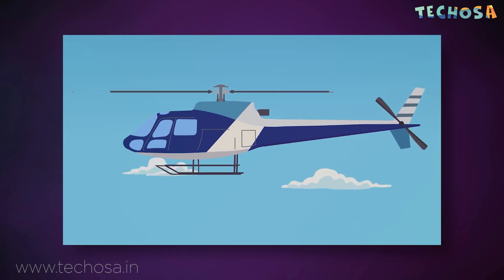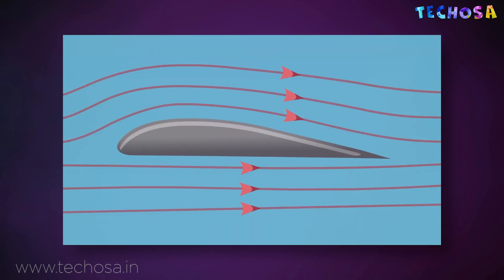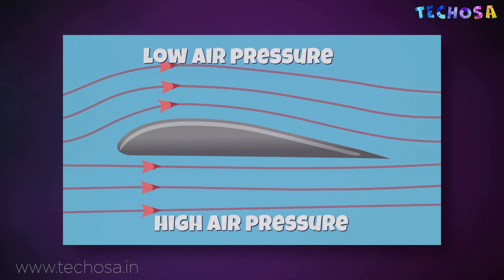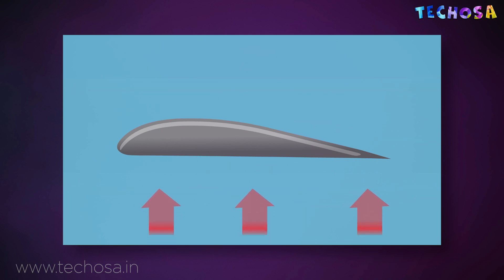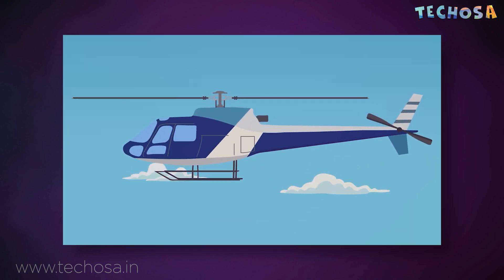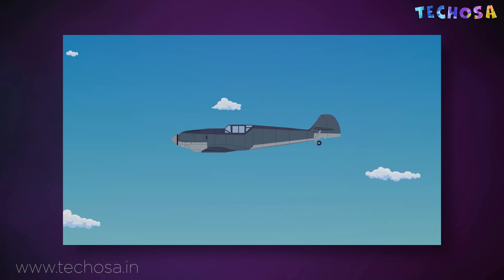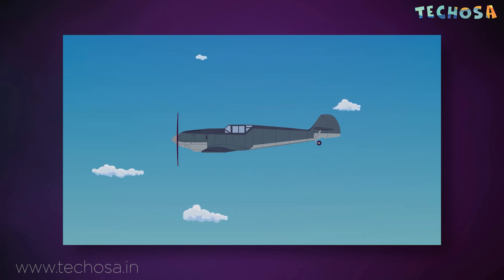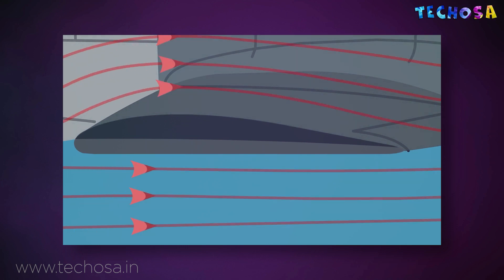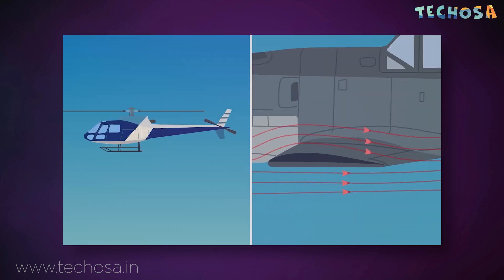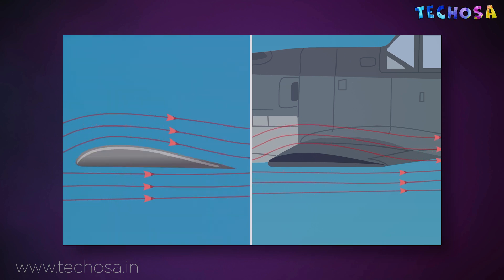For helicopters, when air flows at a faster rate above the blade than below it, air pressure on top of the blade decreases. This air pressure difference between the top and bottom of the rotor blade generates lift, which gets the helicopter off the ground and keeps it in the air. The working principle of an airplane is similar to that of a chopper. An airplane flies by moving very fast so that enough air passes over its wings to produce lift, whereas a helicopter flies by rotating its blades very fast through the air to generate lift.